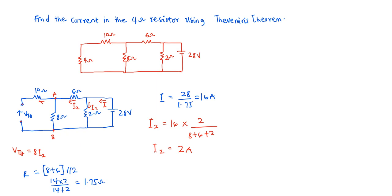Therefore, we can now calculate for the VTH. We get VTH equal to 8 multiplied by 2, which gives us 16 volts. So this is our VTH. Now let's calculate for the RTH.